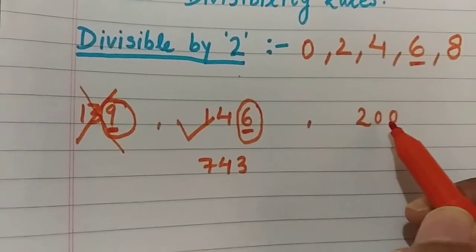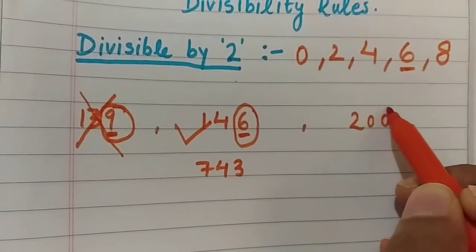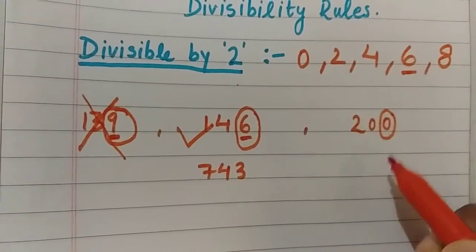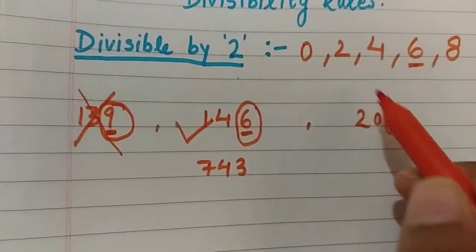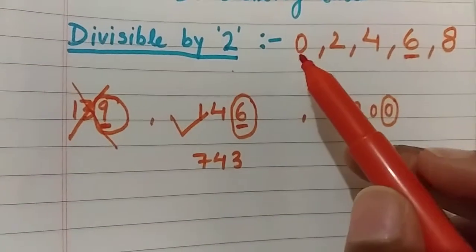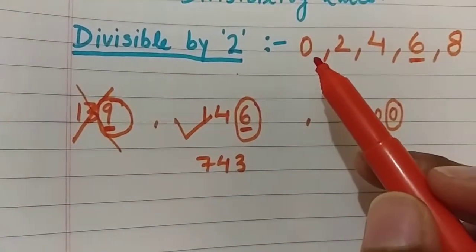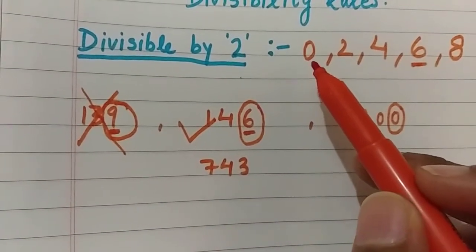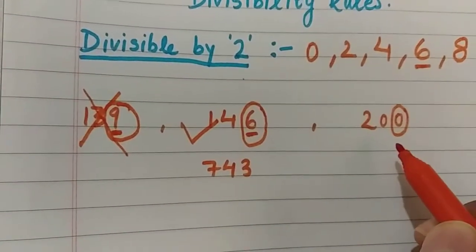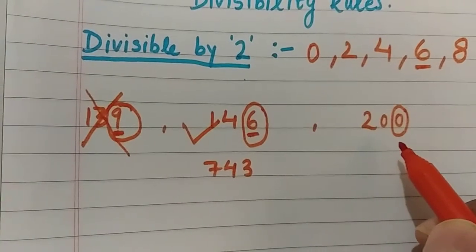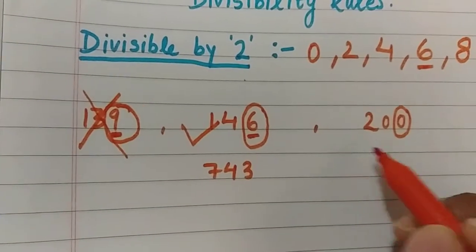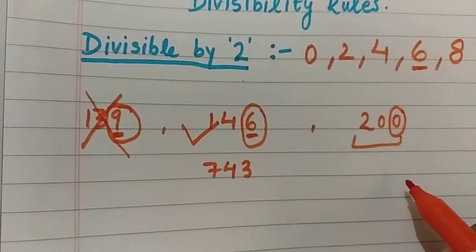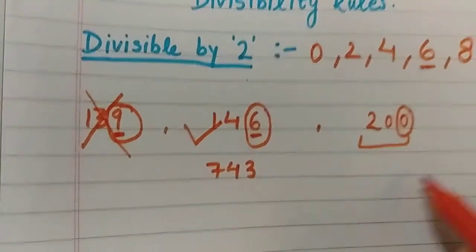Next is 200. What is the ones place digit? It is 0. Since the ones place digit is 0, the number 200 is divisible by 2.